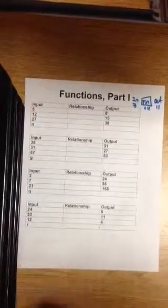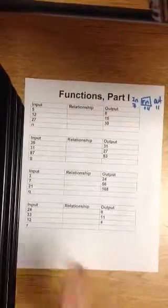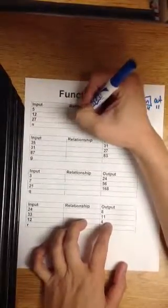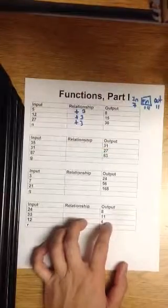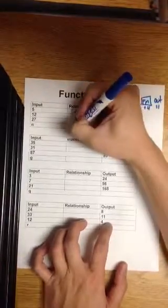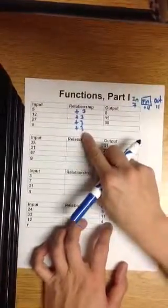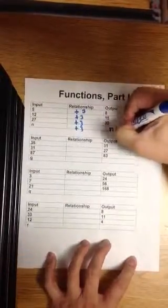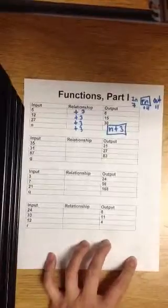But I know it can't multiply 5 by anything to get 8. You know what? I know what it is. It's adding. I think it's adding 3. It is adding 3. So the function rule is add 3. So you add 3 to any number, n plus 3.